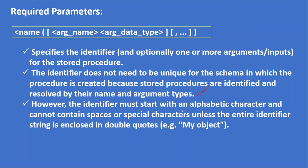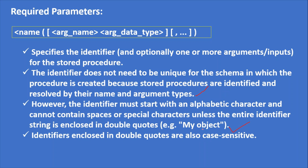However, the identifier must start with an alphabetic character and cannot contain spaces or special characters unless the entire identifier string is enclosed in double quotes. It should start with an alpha character and should not start with a number — this is the normal rule for any object name in Snowflake. However, if you want to use a space in your name, you should include double quotes, and when you include double quotes the procedure name becomes case-sensitive. Identifiers enclosed in double quotes are also case-sensitive.